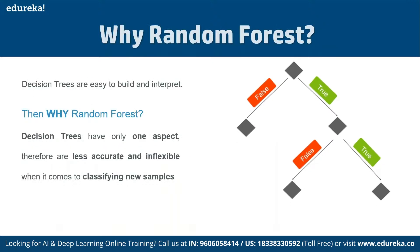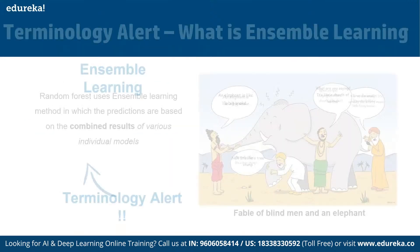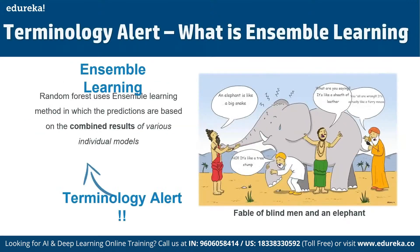The forest it builds is a collection of decision trees, and it is trained with the bagging method. Before discussing random forest in depth, we need to understand how decision trees work. A common question is: what is the main difference between random forest and decision trees, before we discuss ensemble learning?